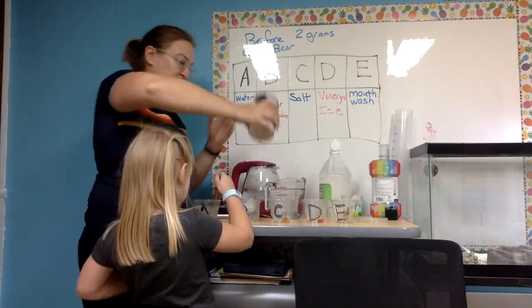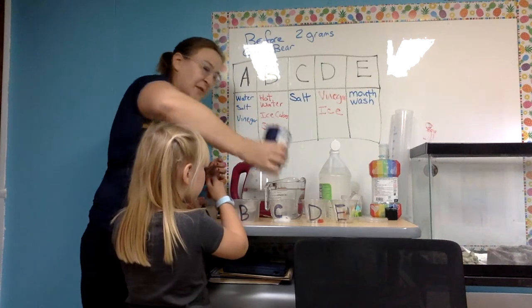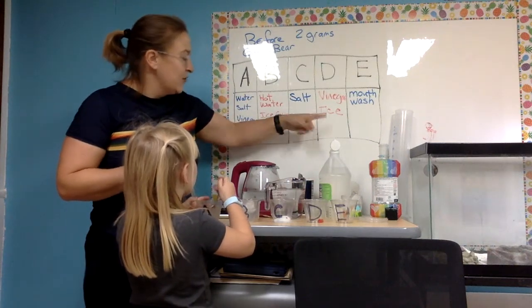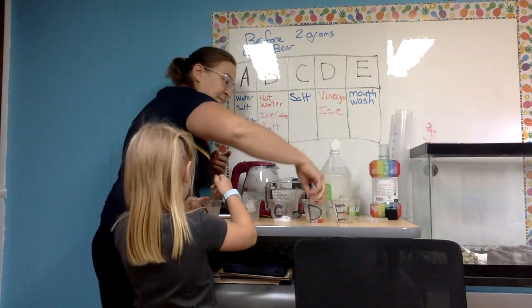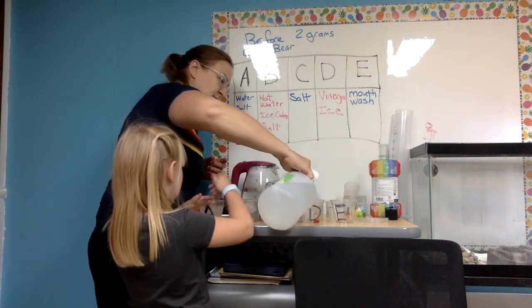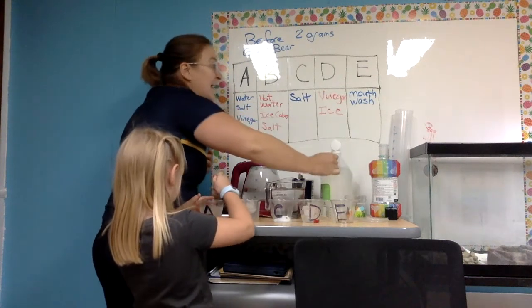C. Somebody told me to try salt. So here we go. There we go, gummy bear. You got salt. D. Vinegar and ice. We'll see what happens. And vinegar. It looks like it's dissolved.